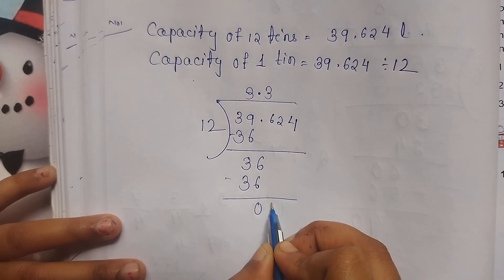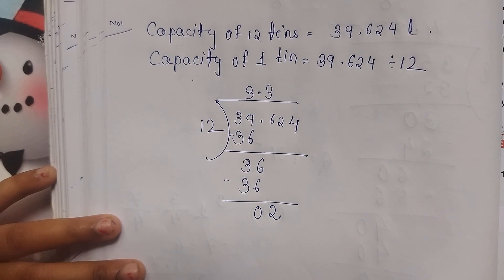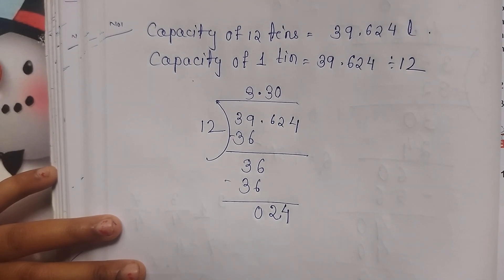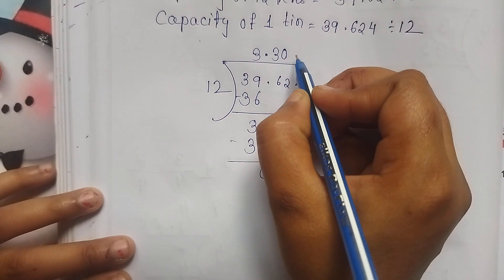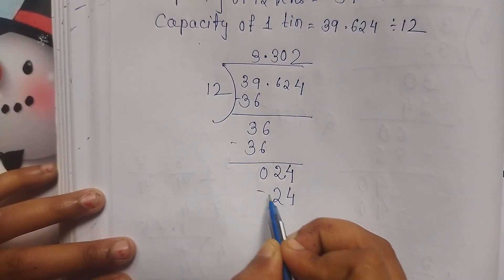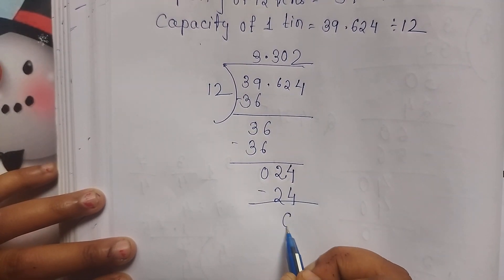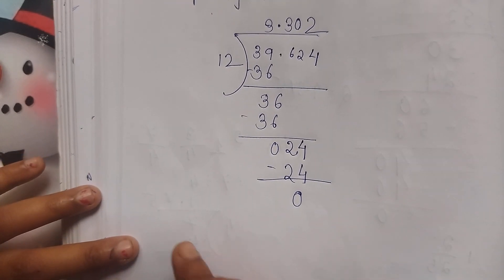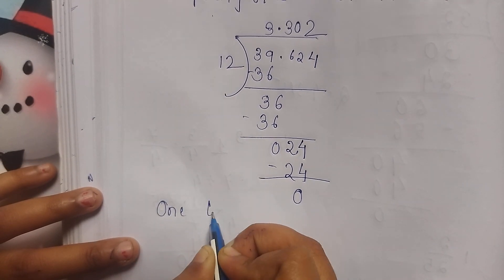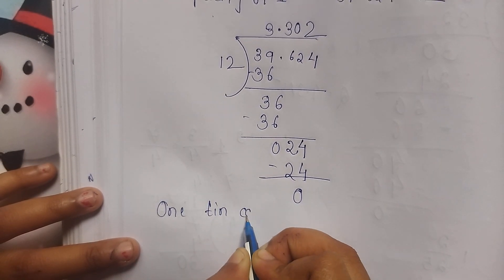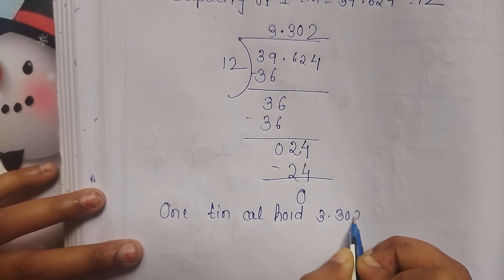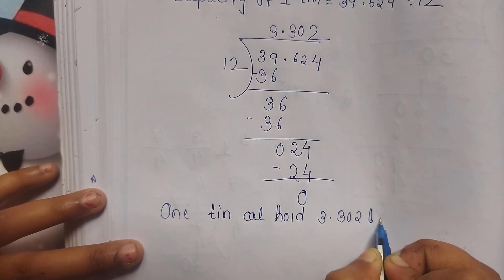Then we bring 2 down. 12 is less than 2, so we write 0. Then 4 is brought down — now the number is 24. So 12 times 2 is 24, and 24 minus 24 equals 0. So 1 tin can hold 3.302 litres of oil.